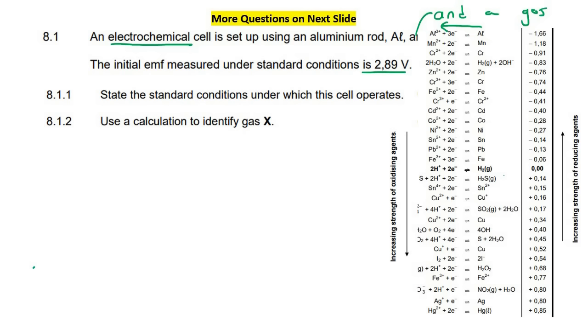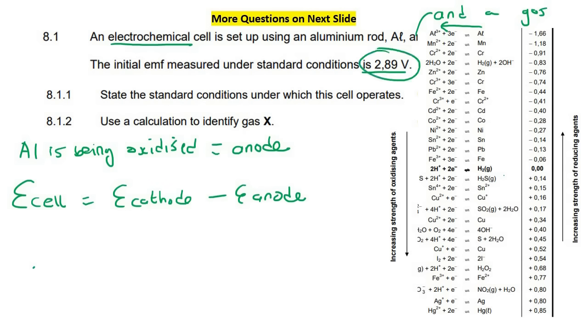So this clearly means that we are going to have to go in that direction over there. Okay, so we know then that that is oxidation. So the aluminum is being oxidized. Okay, oxidation always happens at an anode. So that's the anode.